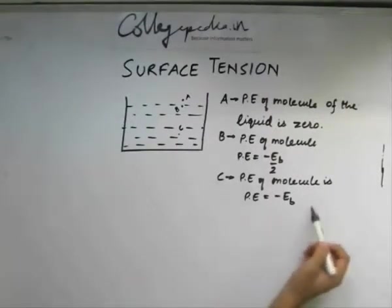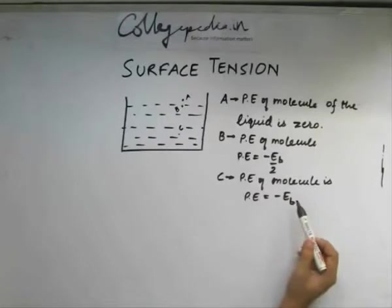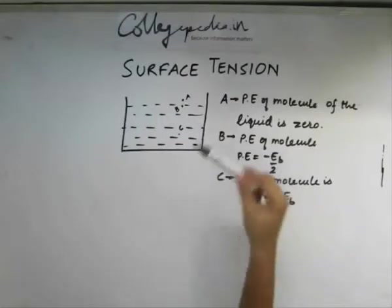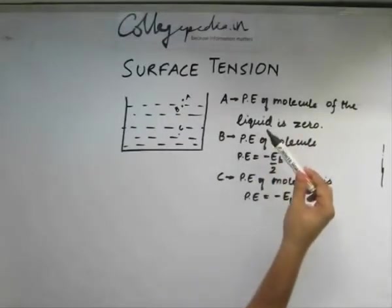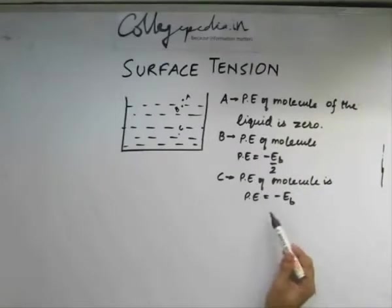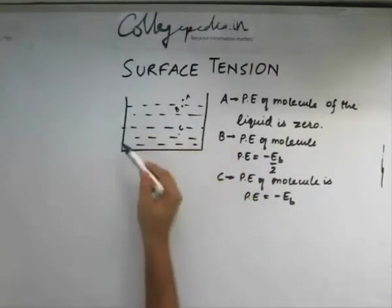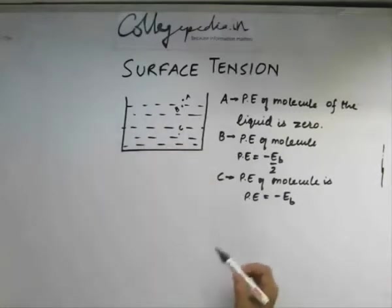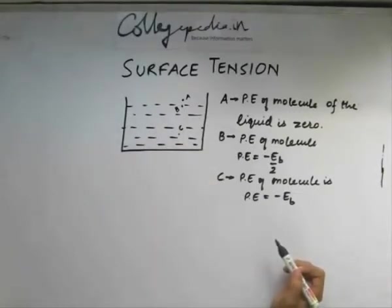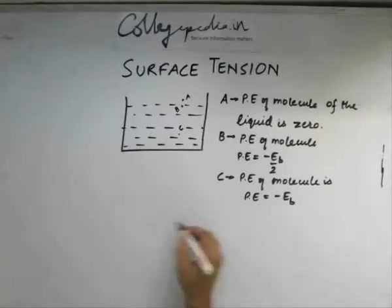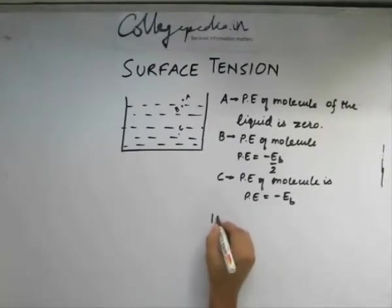We see that at point C, the potential energy is the most negative, then at the surface, and then just above the surface. The potential energy is least in the bulk, stating that the molecules within the bulk of the liquid are the most stable molecules. All this has been in equilibrium.